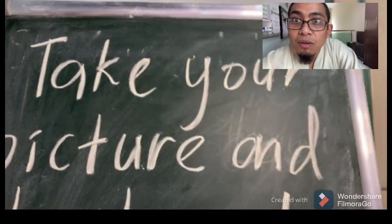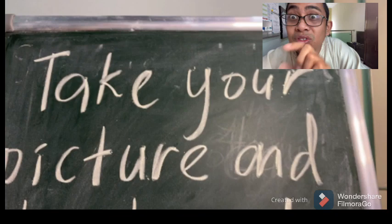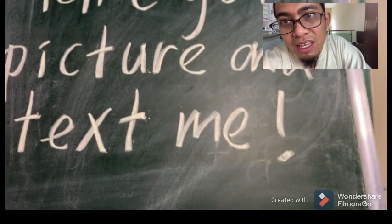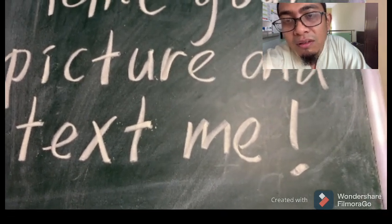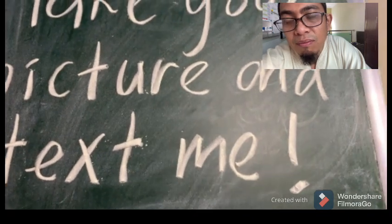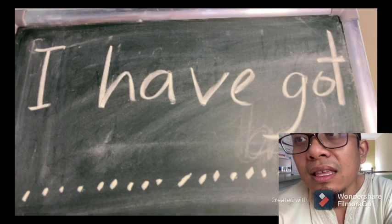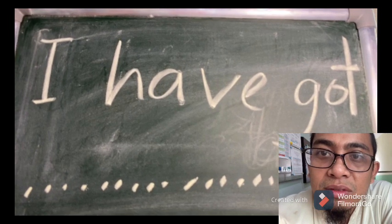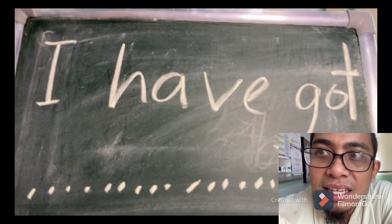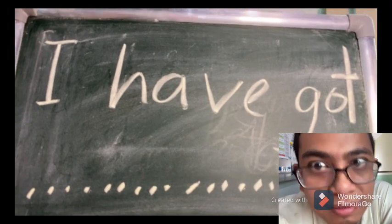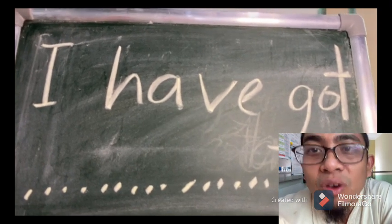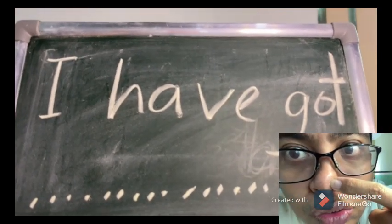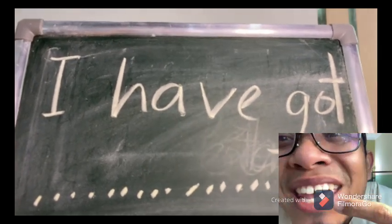Now, what I want you to do is take your picture and text me using WhatsApp or your mobile phone. When you send your picture, you have to write: I have got... For example, I have got a big nose, or I have got big teeth.